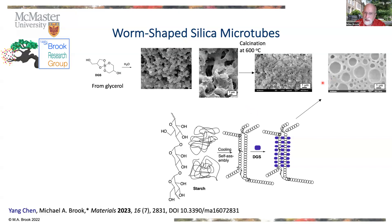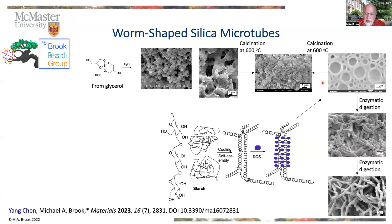There's both silica and starch in that matrix. That's lost if you heat it up to 600 degrees. If instead you use an enzyme — amylase — to degrade the unreacted starch and wash away silica particles inside, we ended up with these very unusual worm-like structures.